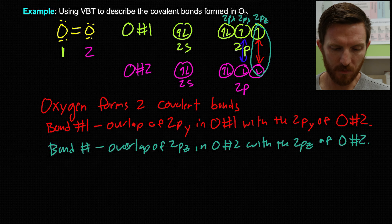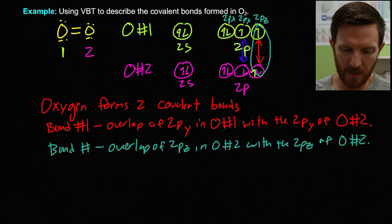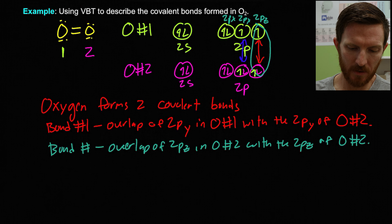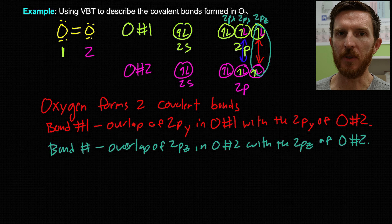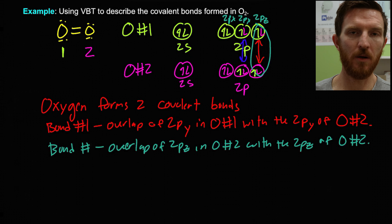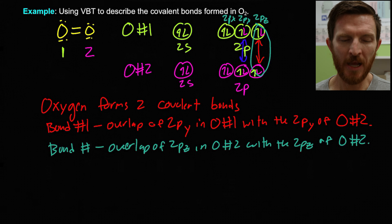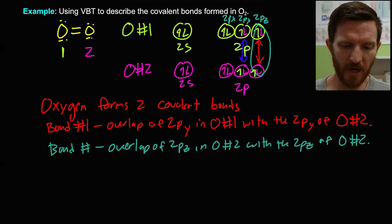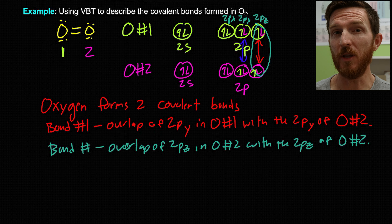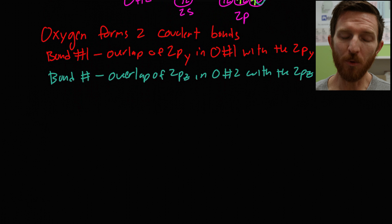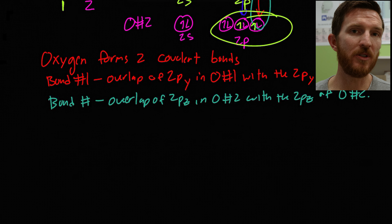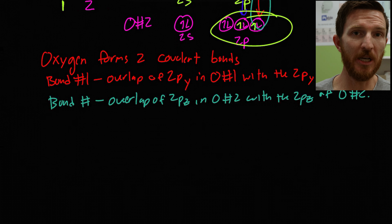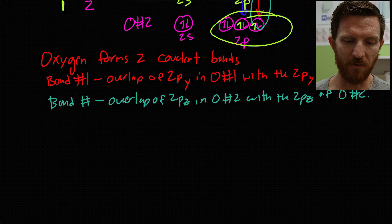Looking at our orbital diagrams, we find that the second oxygen atom now sees an octet because it's sharing those electrons with the other atom, and likewise for our other oxygen atom. We're going to focus on the two orbitals that have one electron in them — the two singly-occupied orbitals.